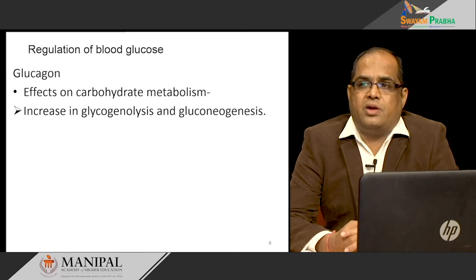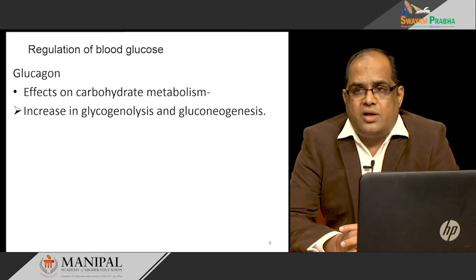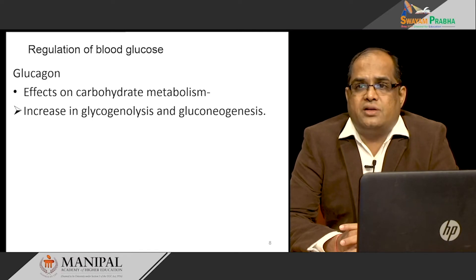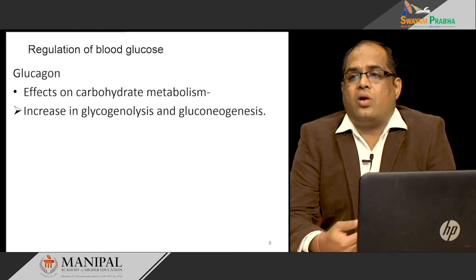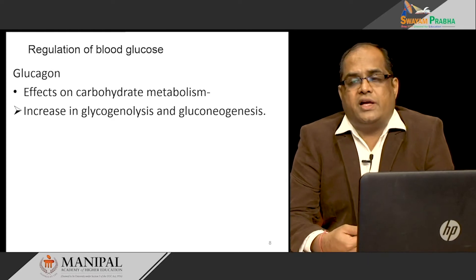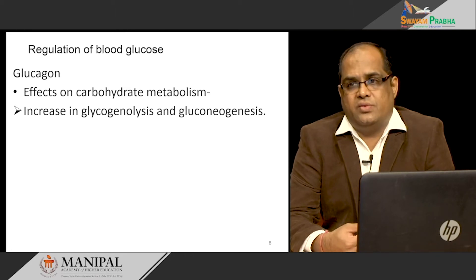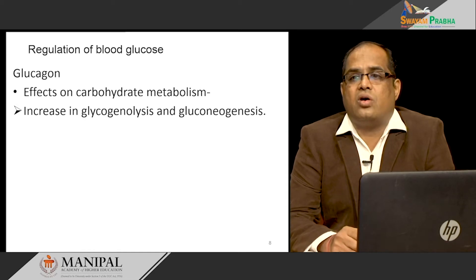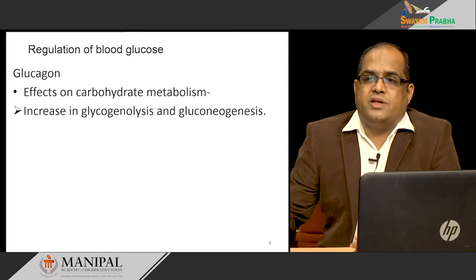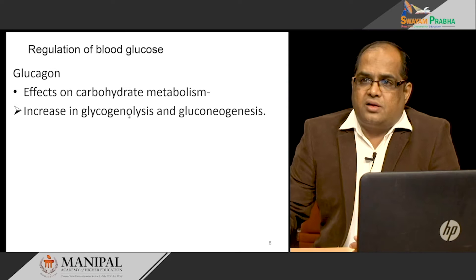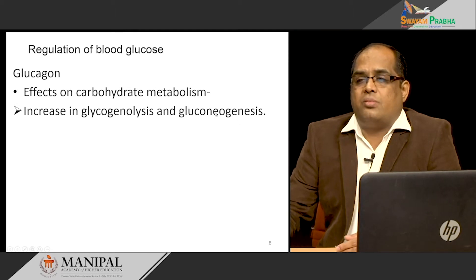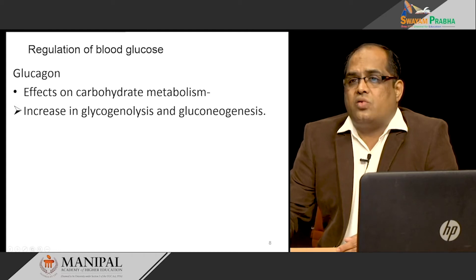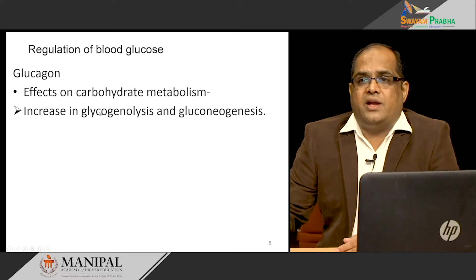The first is the effect on carbohydrate metabolism. Glucagon increases glycogenolysis and gluconeogenesis because it is released during low blood glucose conditions. The body is trying to increase the glucose level by breaking down already stored glycogen. During the well-fed condition, excess glucose was stored as glycogen in the liver — that glycogen is now broken down by glucagon during the fasting condition to provide glucose to the blood. Once glycogen stores are exhausted, the body can also synthesize new glucose from non-carbohydrate sources via the gluconeogenic pathway. These two pathways are activated by glucagon.